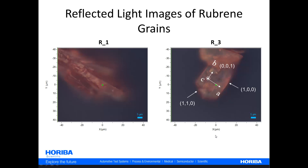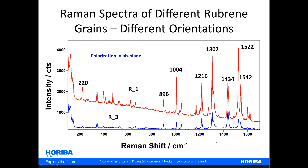Now we're going to look at the Raman spectra obtained from those different grains at the green dot location. The blue spectrum is R3, rubrene grain 3, in which we're looking at the C phase, and therefore our incident polarization was fixed in the AB plane. The red trace is from the other grain, which may be polycrystalline. You see the dramatic differences in the Raman spectra of these grains simply because of crystallization and orientation.